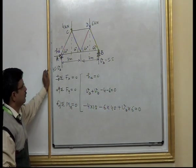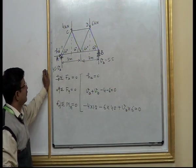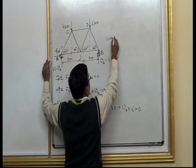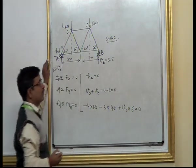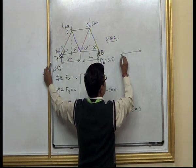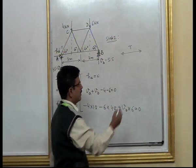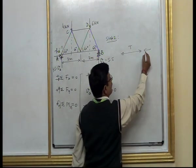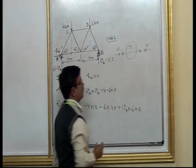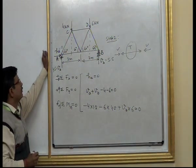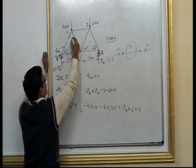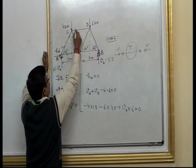We now go to step number 2: implementing the method of joints. In step 2, we assume tensile force in all the members. Tensile force means the arrowhead is directed away from the joint. If the arrowhead is away from the joint, that means tensile force. So in every member, we assume tensile force like this — we assume tensile force in all the members.